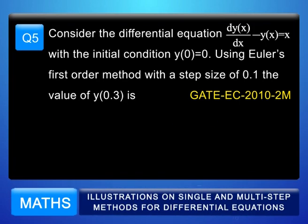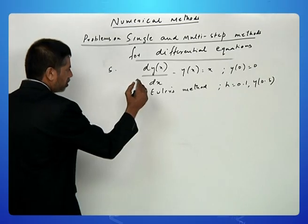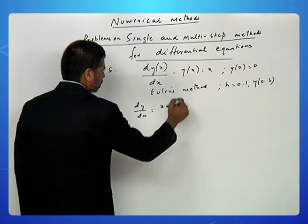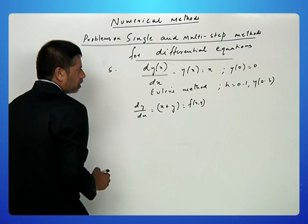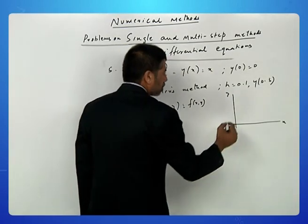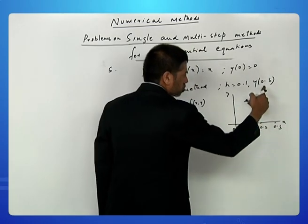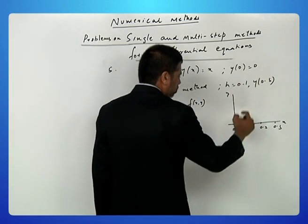Question number 5: consider dy/dx - y(x) = x with initial condition y(0) = 0. Using Euler's first-order method with step size 0.1, find y(0.3). First, rewrite in standard form: dy/dx = x + y, which is f(x, y). With h = 0.1 and starting at x₀ = 0, since we want y(0.3), Euler's method must be applied in three steps.